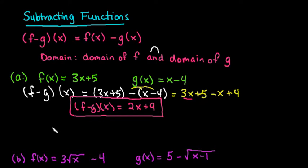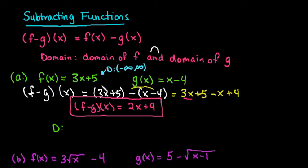The next thing we want to look at is the domain. Remember that the domain of the answer has to fit in the domain of f and the domain of g. For this first example, the domain for f of x equals 3x plus 5 is negative infinity to positive infinity because there are no restrictions. You always start with negative infinity to positive infinity. If you have any radicals, the radicand has to be greater than or equal to 0. If you have any denominators, the denominator cannot equal 0.